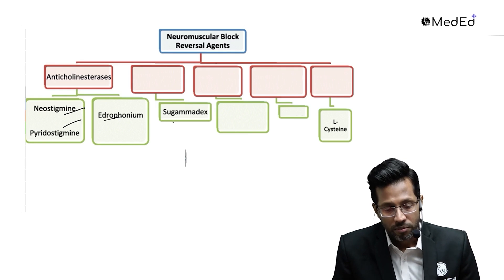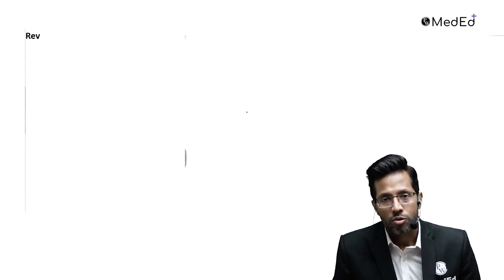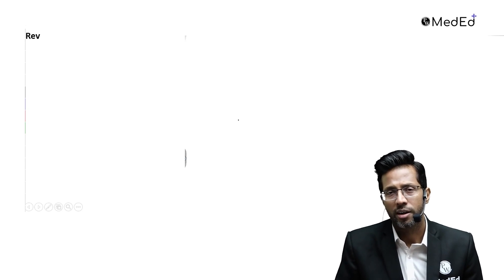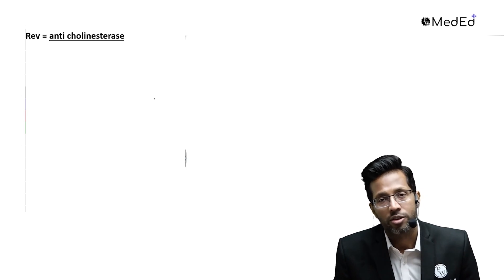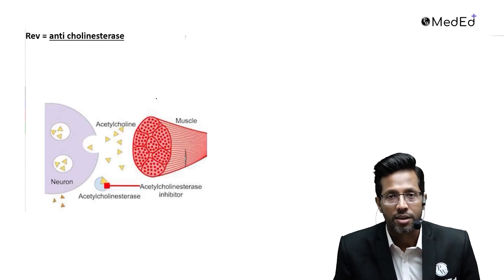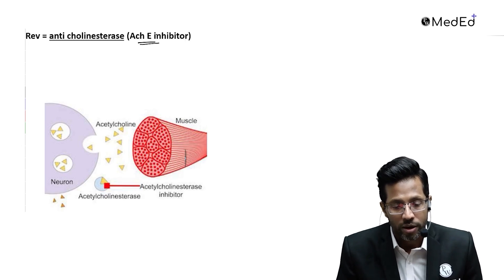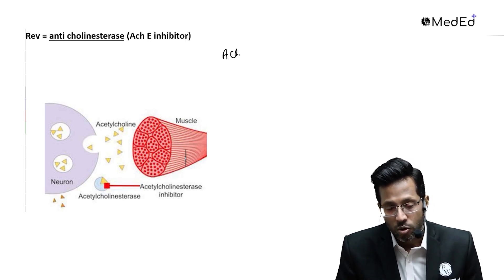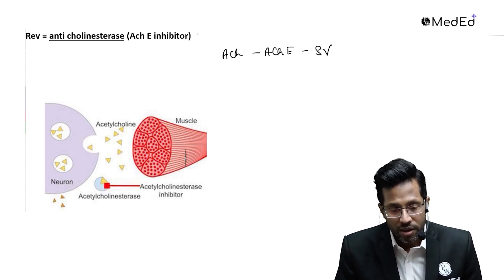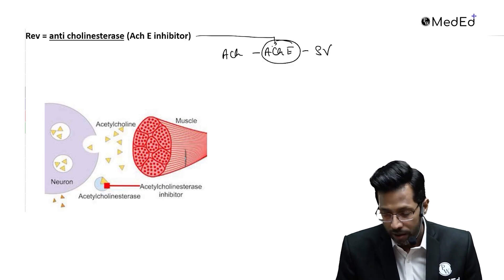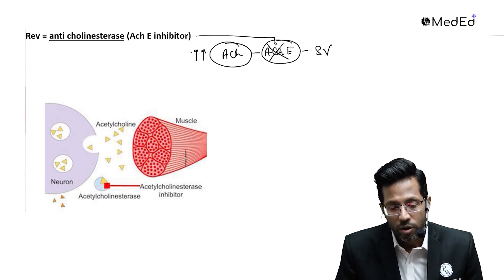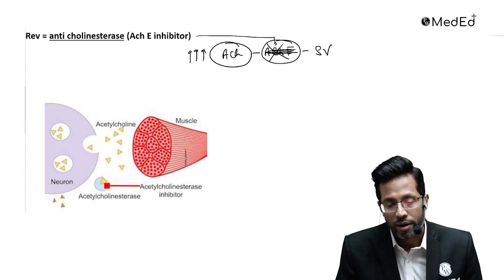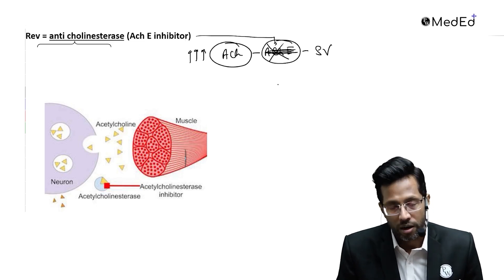The reversal agents we're discussing are neostigmine, edrophonium, pyridostigmine, and sugammadex and l-cystine briefly. The main reversal agents are anti-cholinesterases — they are acetylcholinesterase inhibitors. They inhibit the acetylcholinesterase enzyme, which normally destroys acetylcholine. So these cholinesterase inhibitor drugs stop that enzyme and increase acetylcholine everywhere in the body because the acetylcholine doesn't get destroyed.